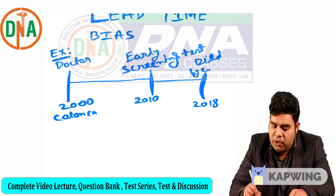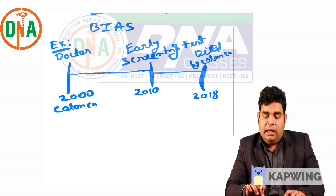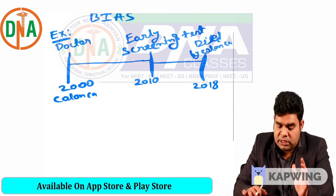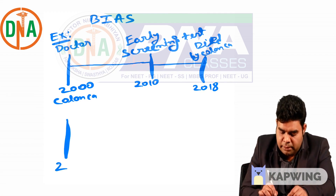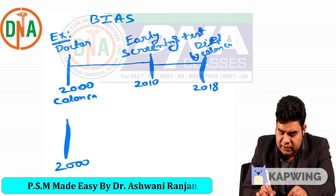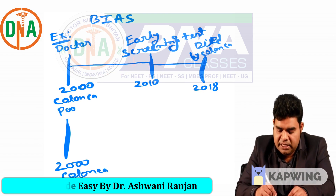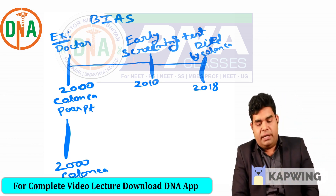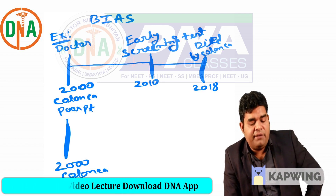And then in 2018 he died — he died due to colon cancer. Now suppose I have one more friend who is a poor patient, and suppose he also developed colon cancer in 2000.